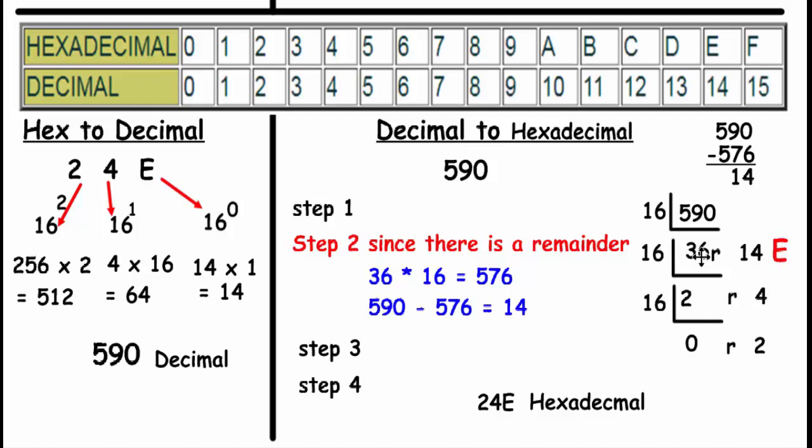16 goes into 36 how many times? Twice. And what's the remainder? Well, 2 times 16 is 32, with a remainder of 4. 16 goes into 2 how many times? Zero times, with a remainder of 2. So our number is 24E, just what you see right here.